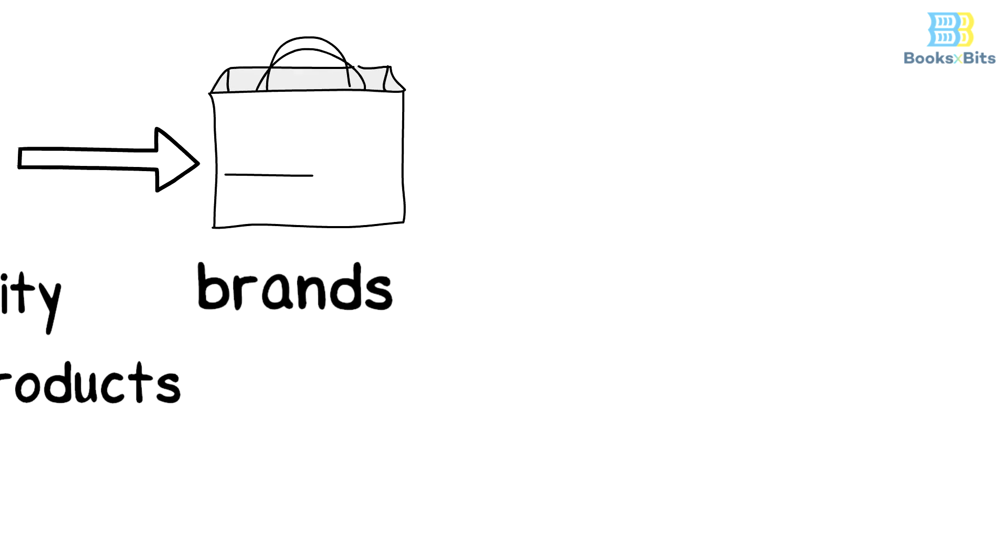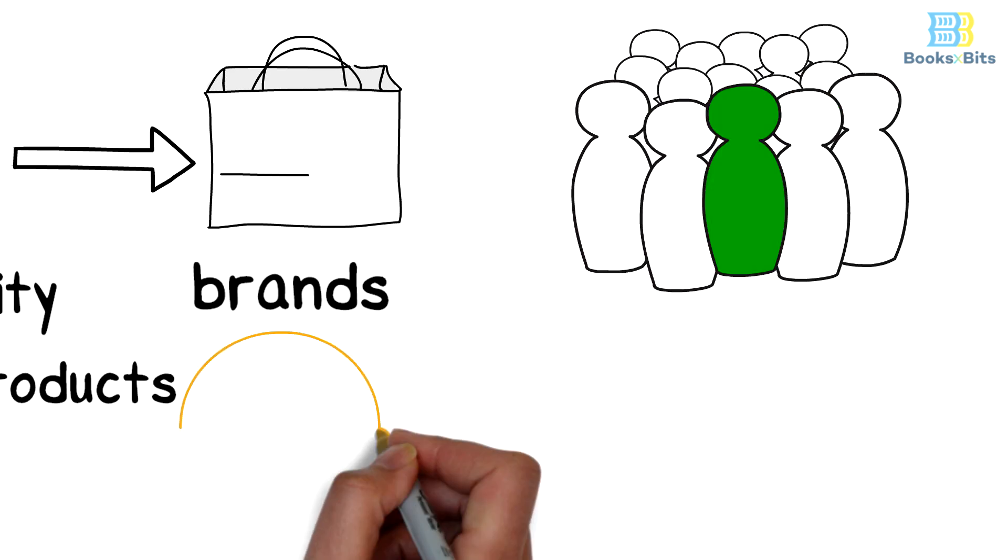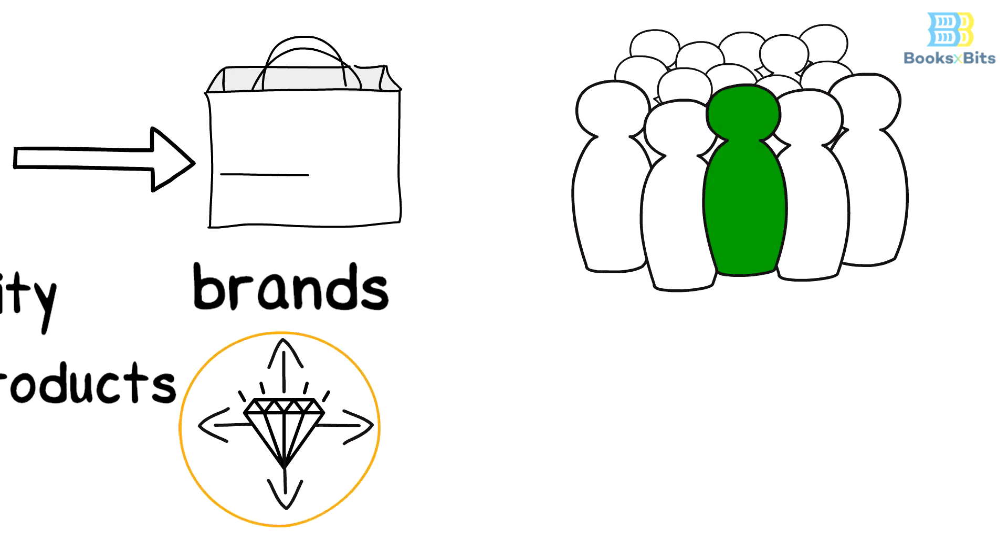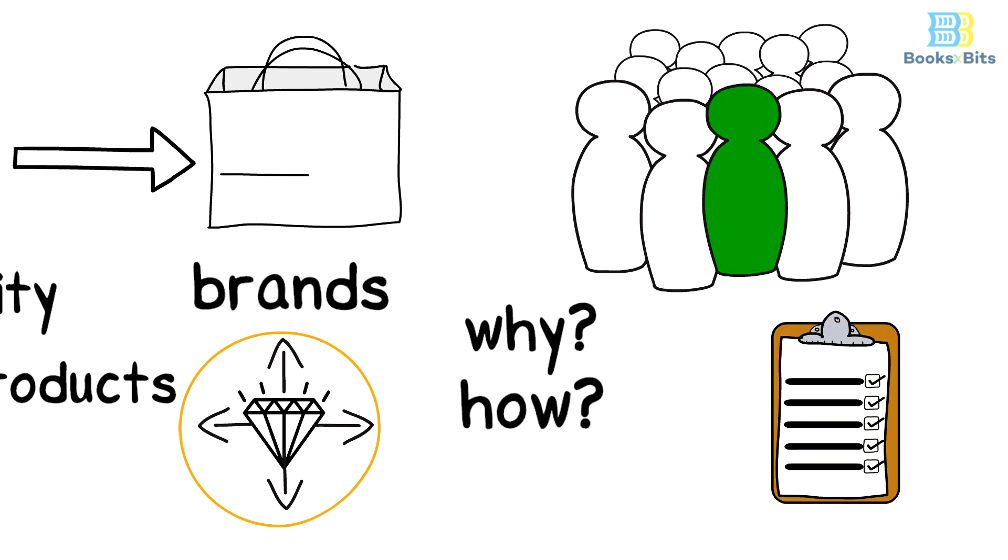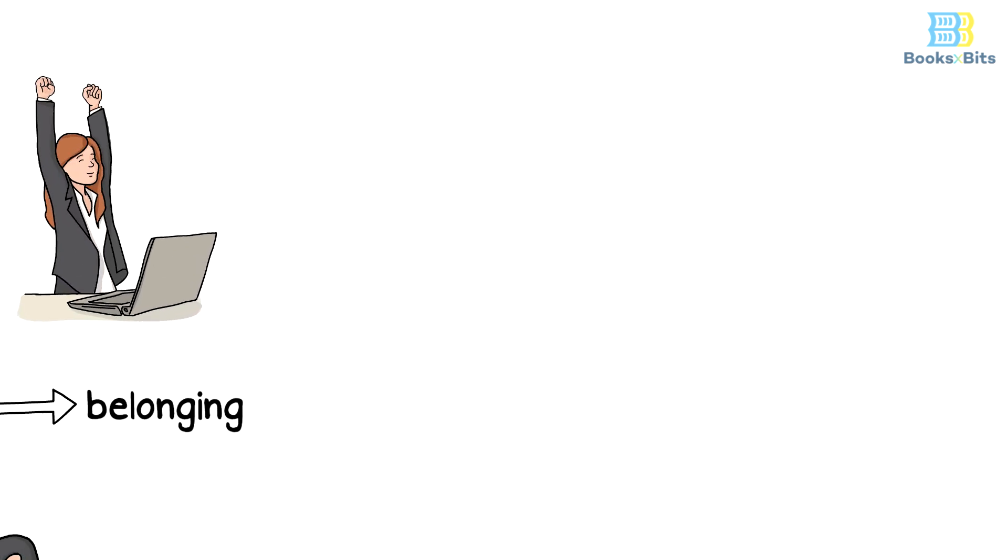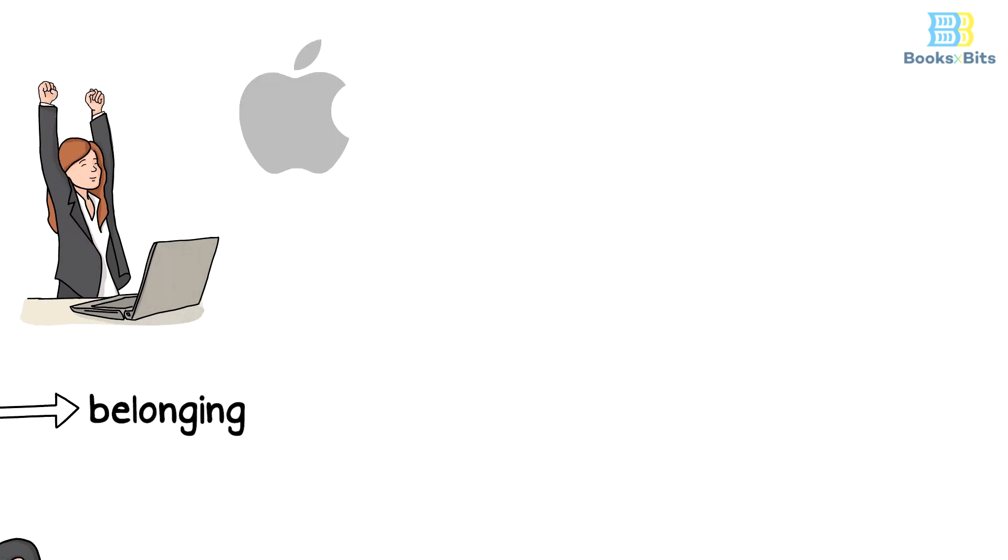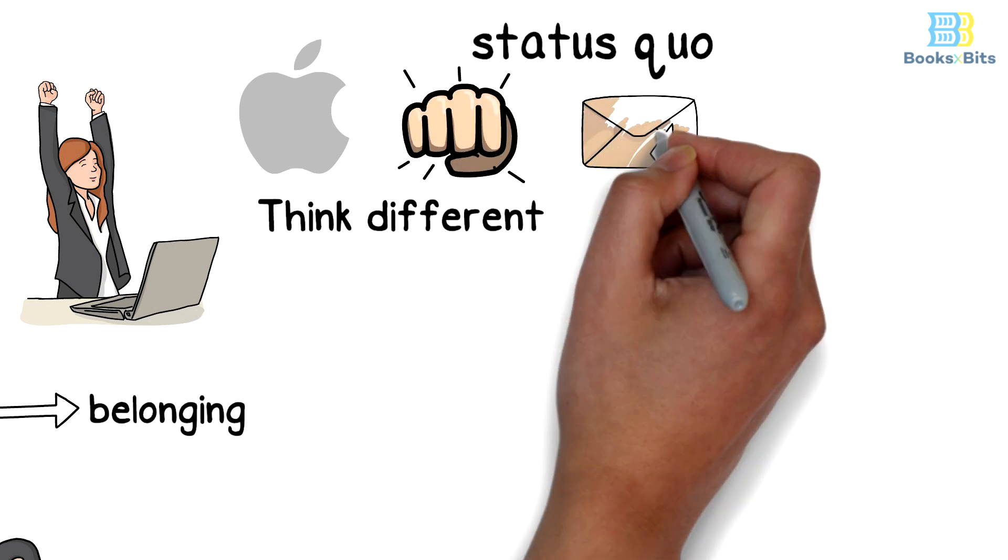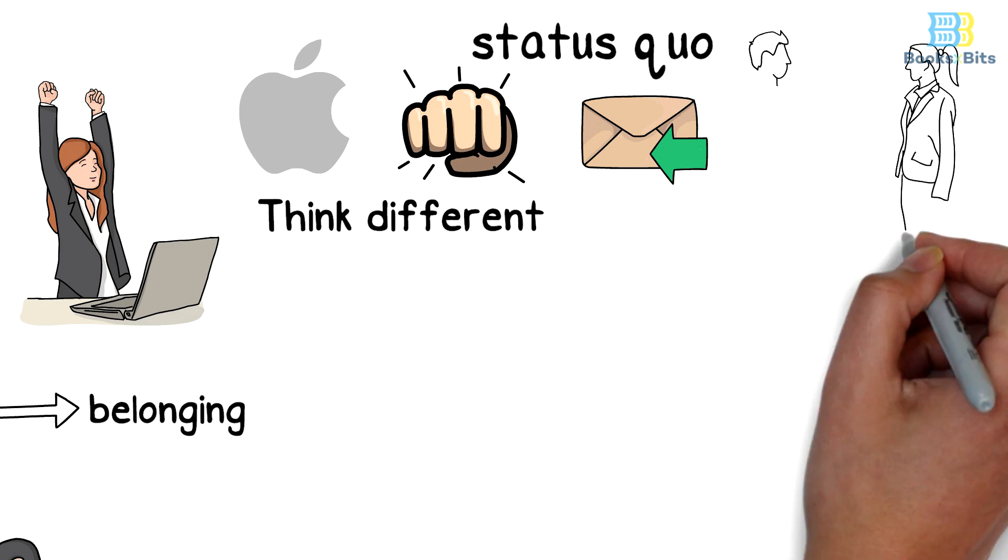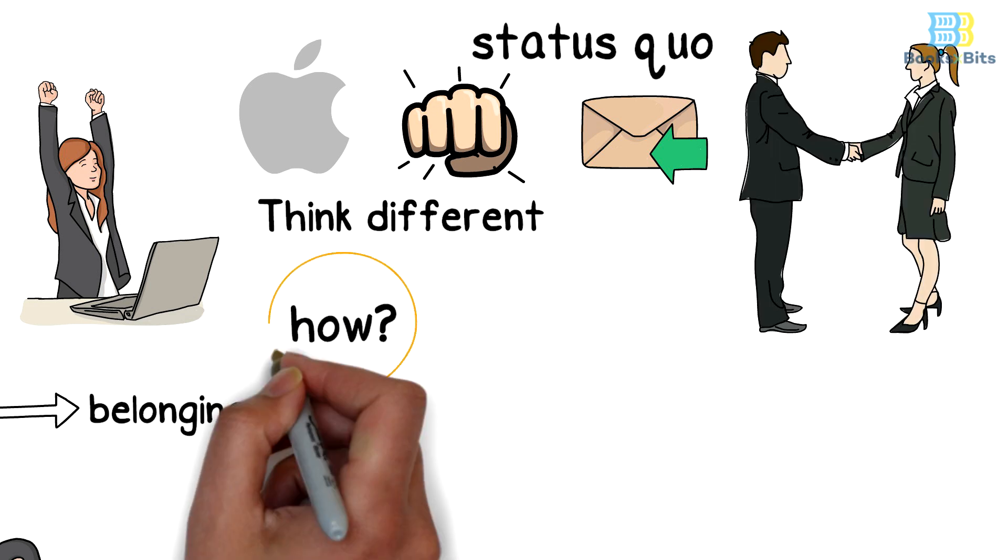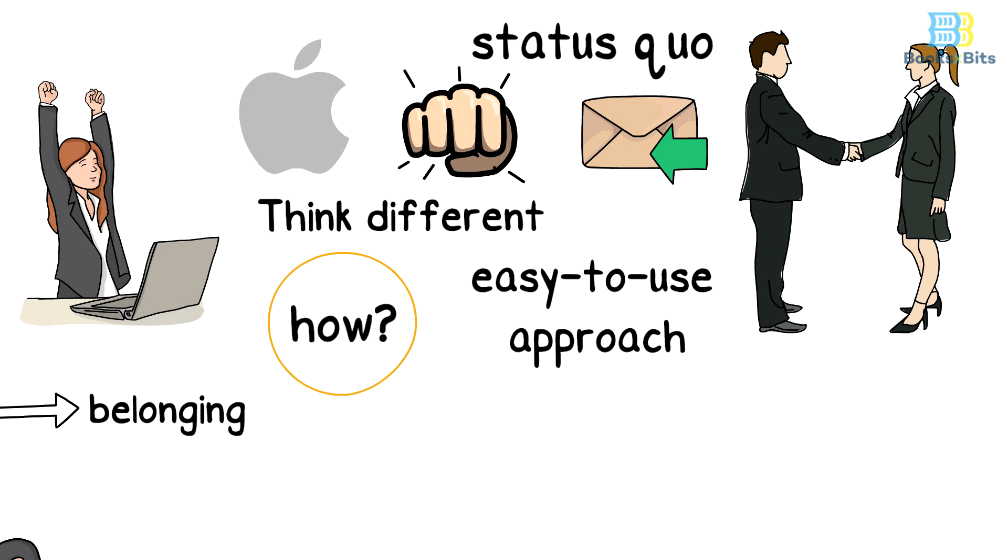Therefore, leaders begin by explaining the essence of the golden circle. They first explain why they do what they do, then how they do it, and what's their product in the end. Apple company is a good example of this phenomenon. Apple used a slogan that says 'think different.' This slogan emphasizes their philosophy of challenging the status quo and delivering their message and goals to the customer. Apple's How circle is an attractive and easy to use approach, and finally Apple's What circle is computers.